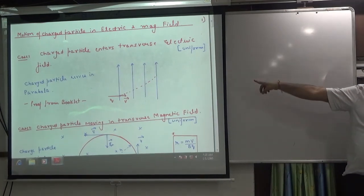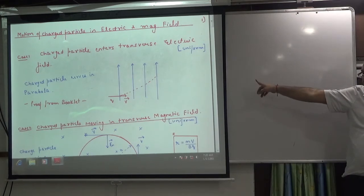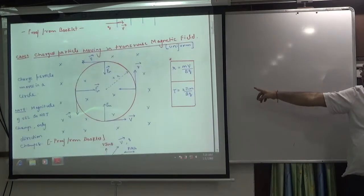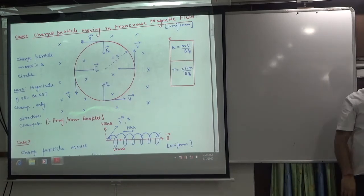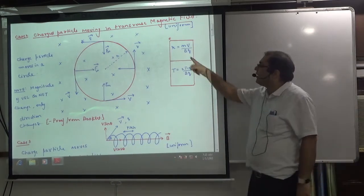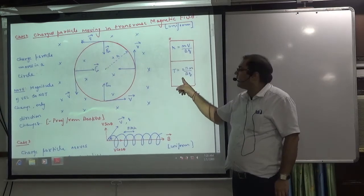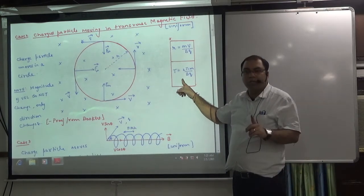So the sheet number 63 is case number 1, we have done this proof, parabola. Case number 2, we have done this proof. Why are they floating in the circle? And the radius is mv by bq, and time period 2πm by bq. This will be the work in numerical.